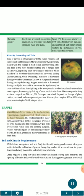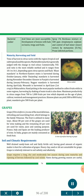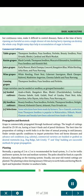Grape (Vitis vinifera L.) is one of the most delicious, refreshing and nourishing fruits, belonging to the family Vitaceae. About 80% of grapes are used for winemaking and the remaining 20% for raisin, juice and canning. France, Italy and Spain are the leading producers of wine. In India, grapes are mainly consumed as fresh fruit. Soil and Climatic Requirements: Well-drained, sandy loam, fairly fertile soil with good organic matter is best for cultivation. Heavy clay, sand or silt are unsuitable. Grape is relatively tolerant to soil salinity and alkalinity. Grape requires a long, dry and moderately hot season during cane maturity and ripening of berries followed by cool winter. Rains during growing season are useful, but continuous rains make it difficult to control diseases; a single shower during berry ripening can destroy the whole crop. Bright sunny days help in accumulation of sugar in berries.